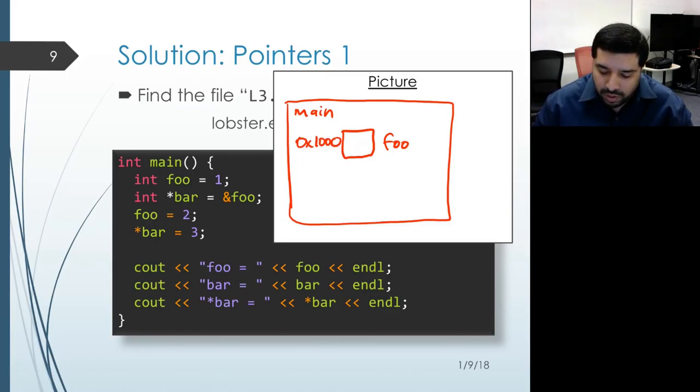We also have bar, which also goes inside the activation record for main and also gets placed at some address. We'll assume that it gets placed at address 1004. Now initially, the values that are within the memory locations for foo and bar are undefined.